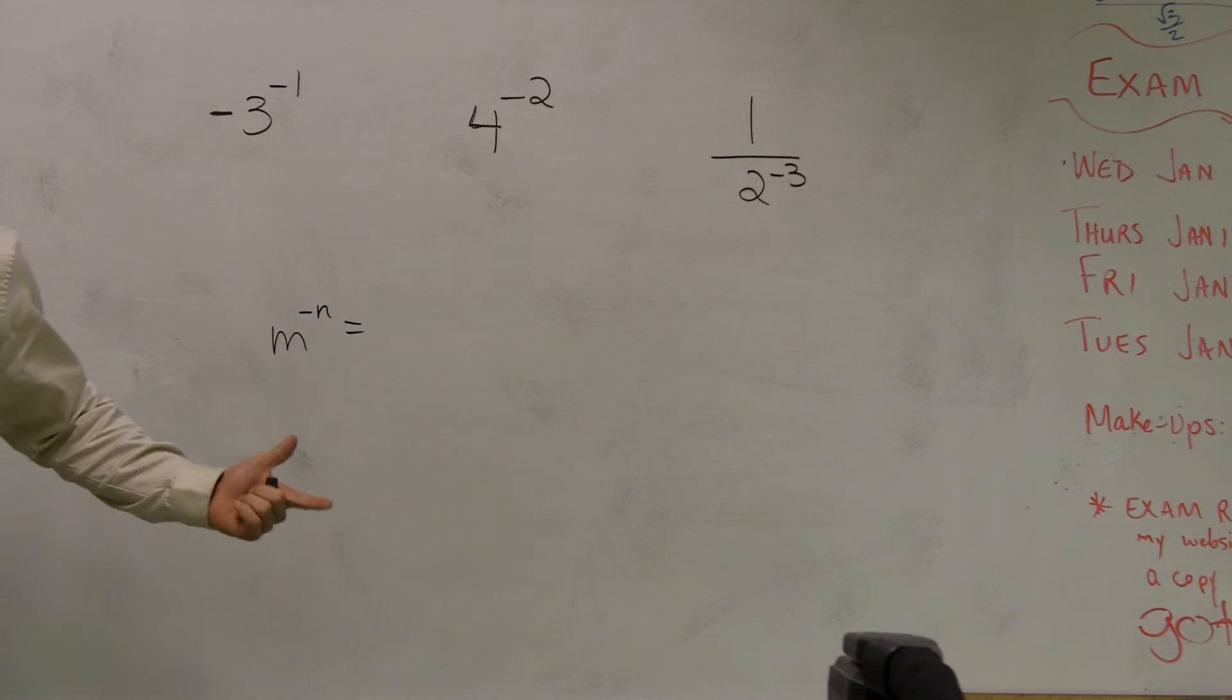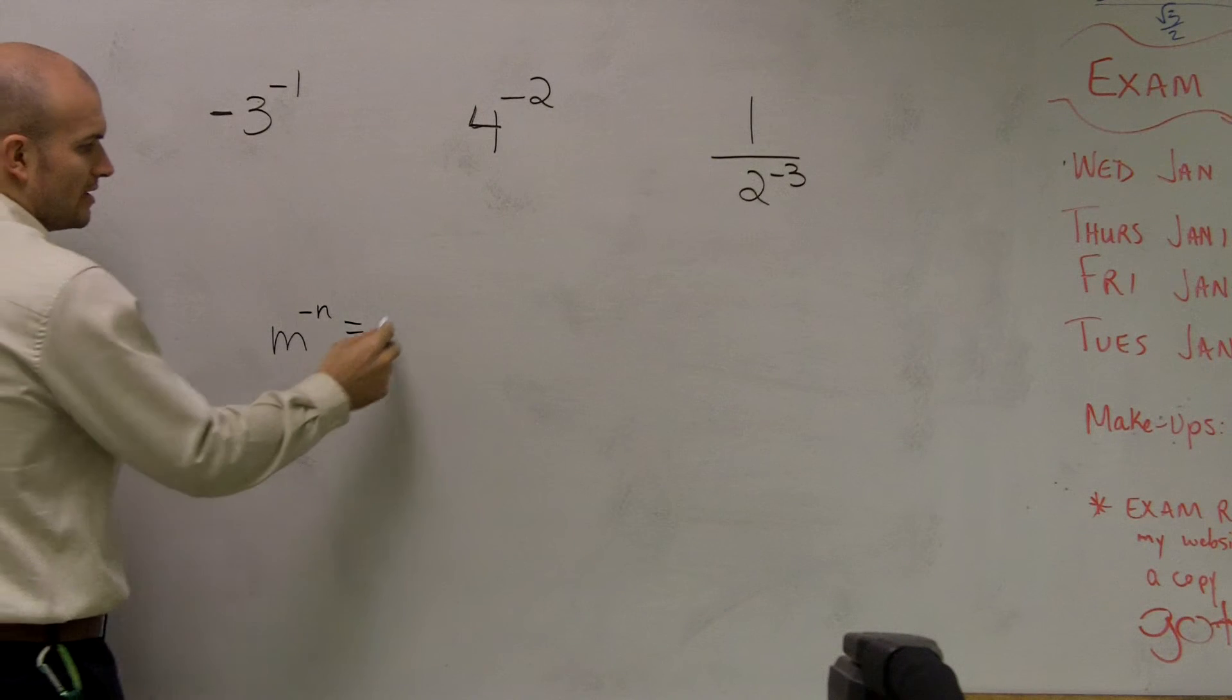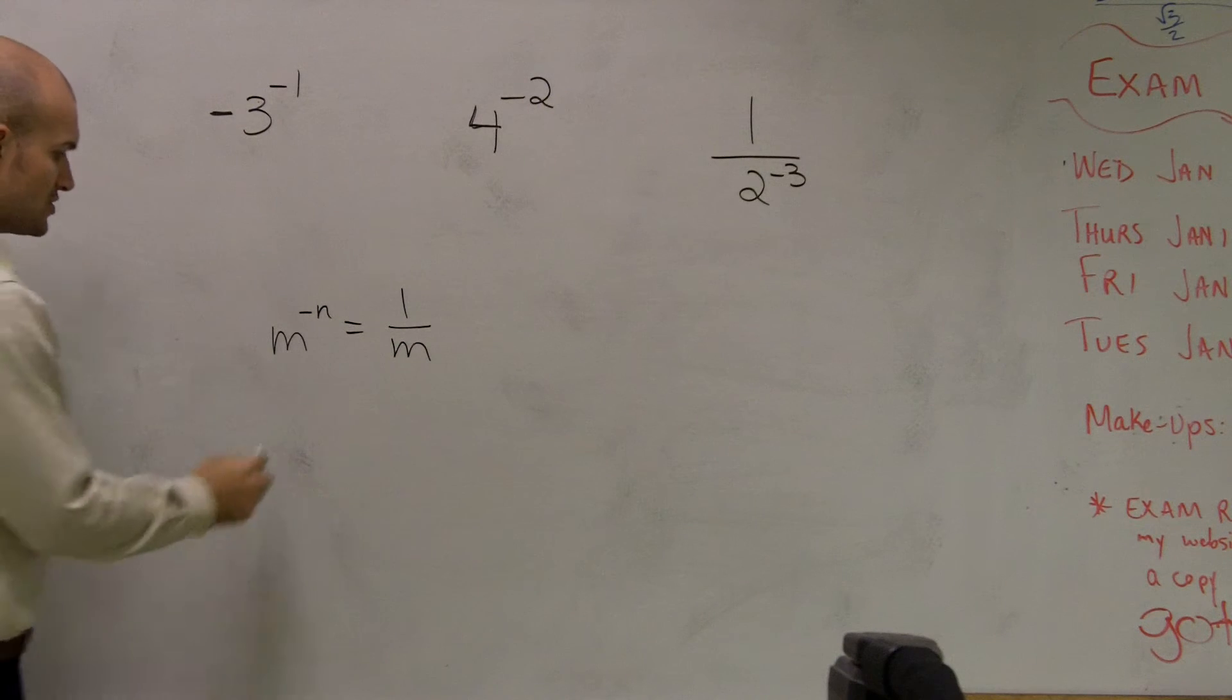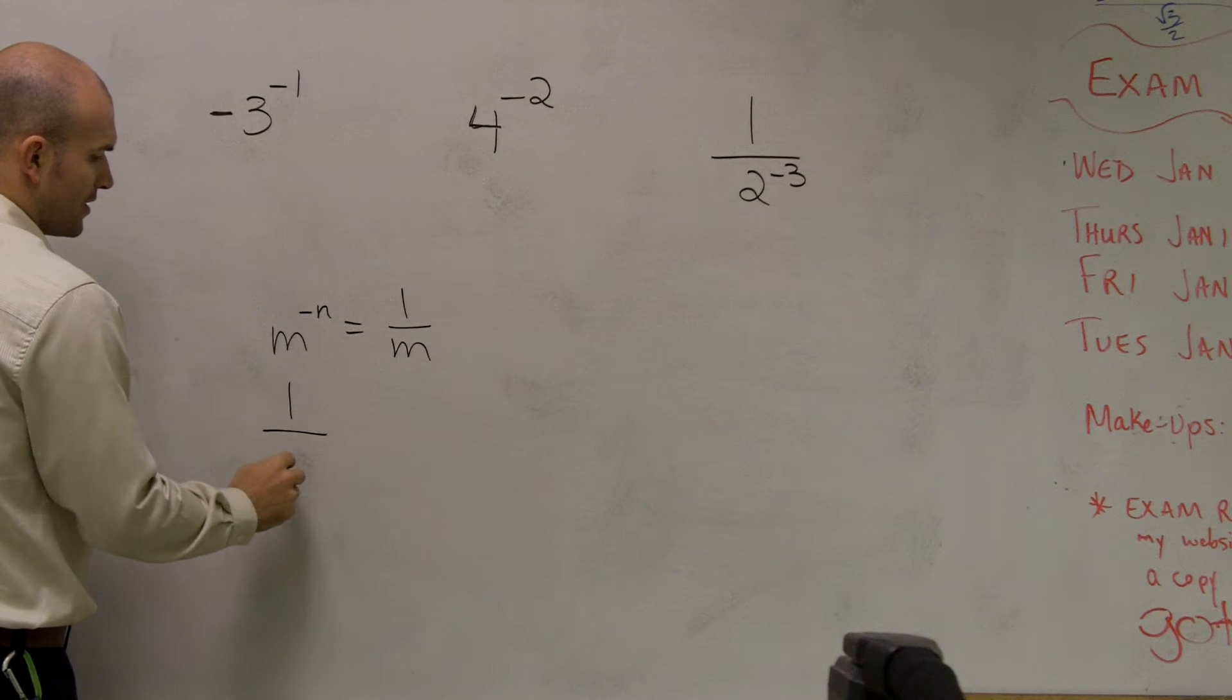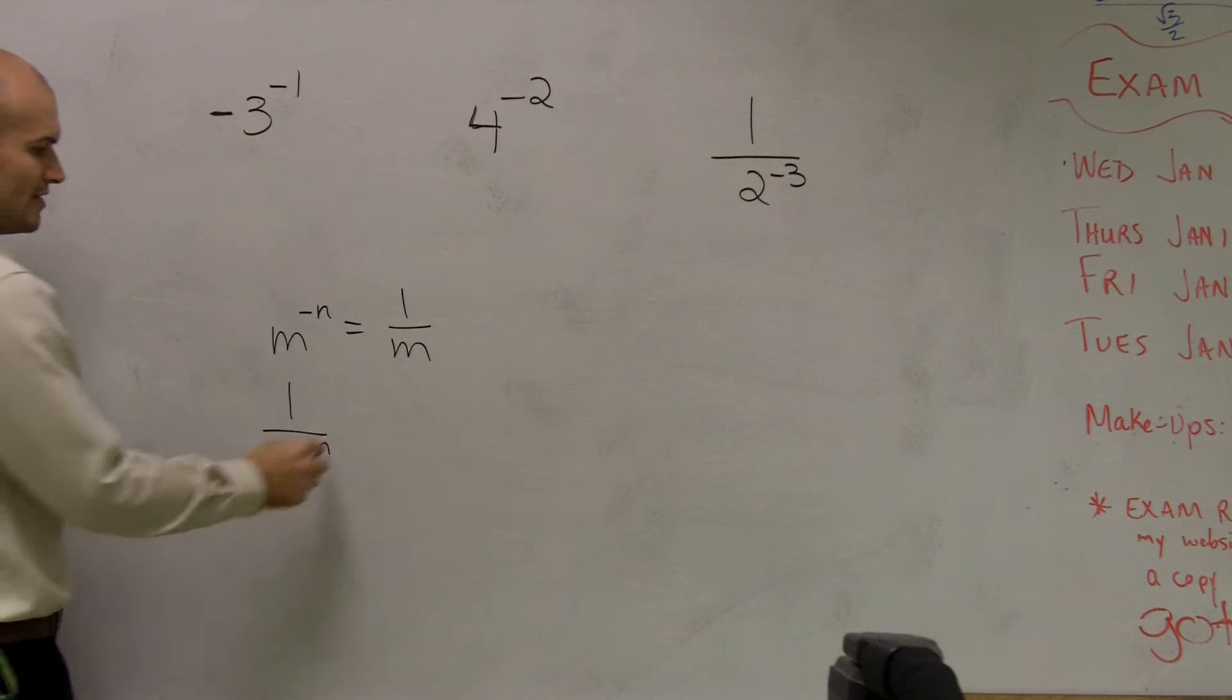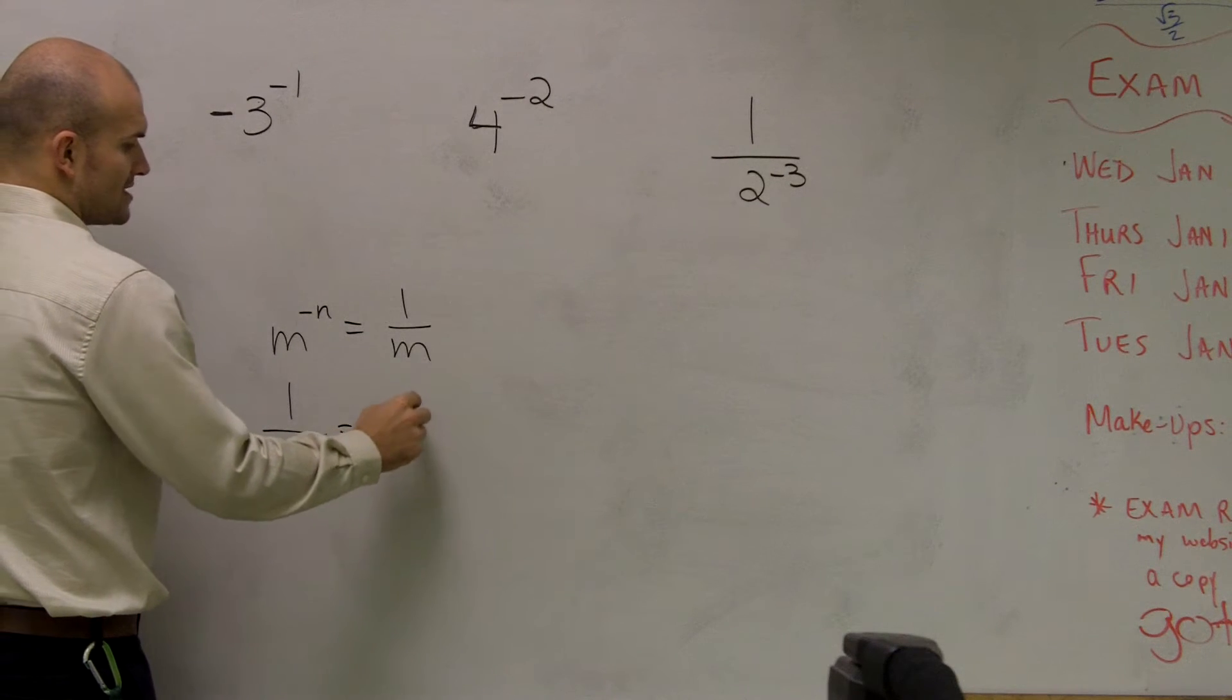what I can do is to not write that with a negative exponent, I can write that as 1 over m to the n. And to the contrary, it also works. If I have 1 over m to the negative exponent, I can take that out of the denominator and rewrite it as the numerator as a positive exponent.